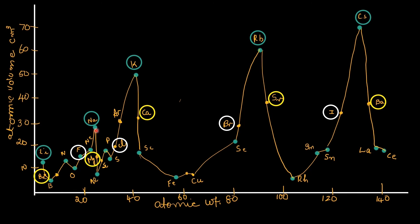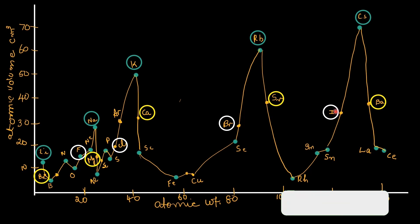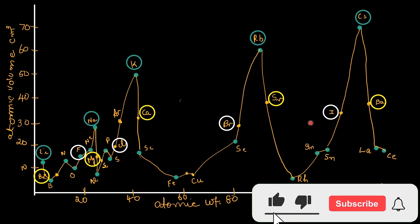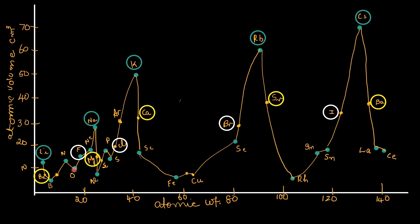These are the descending portions of the graph. Elements like fluorine, chlorine, bromine, iodine which are shown in white circles are the most electronegative elements and they are seen in positions in the ascending part of the graph.